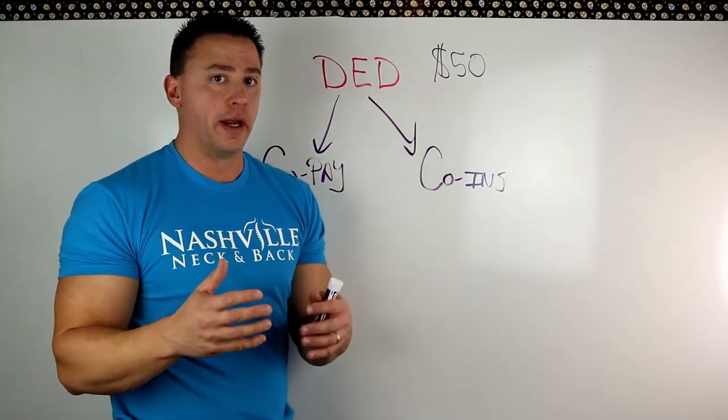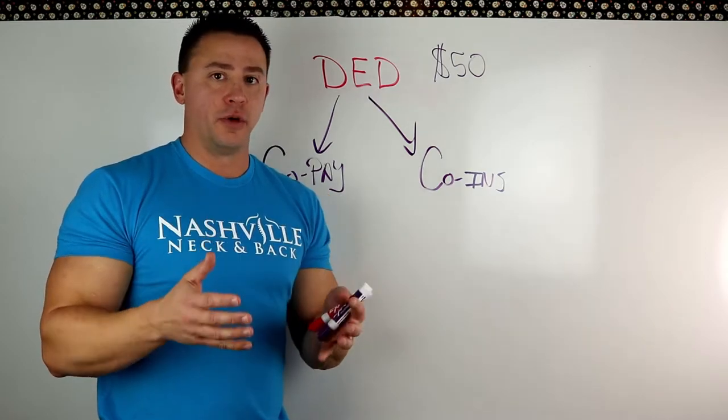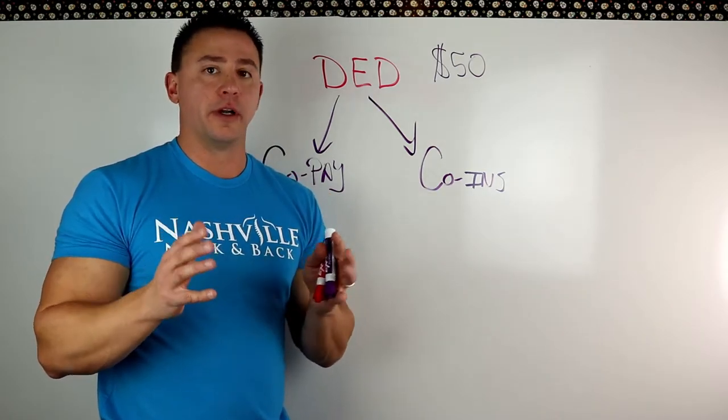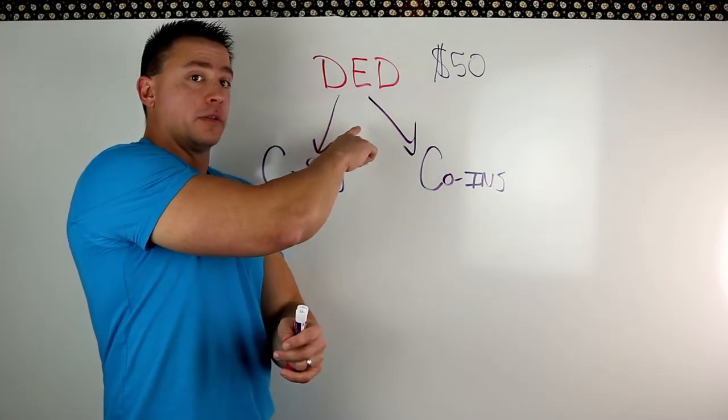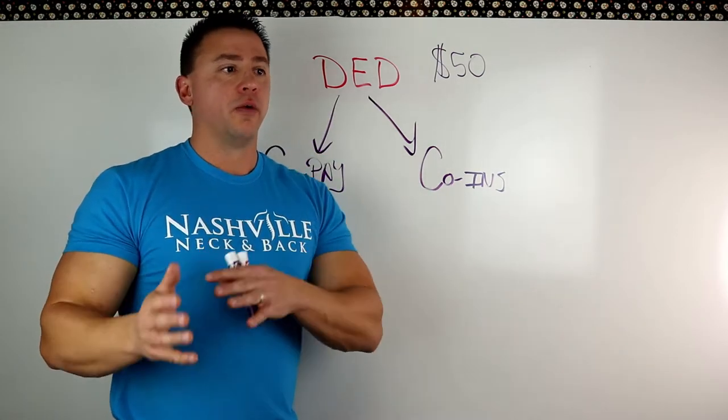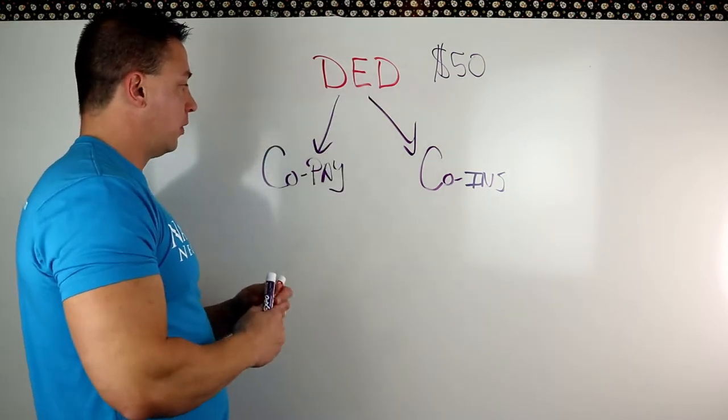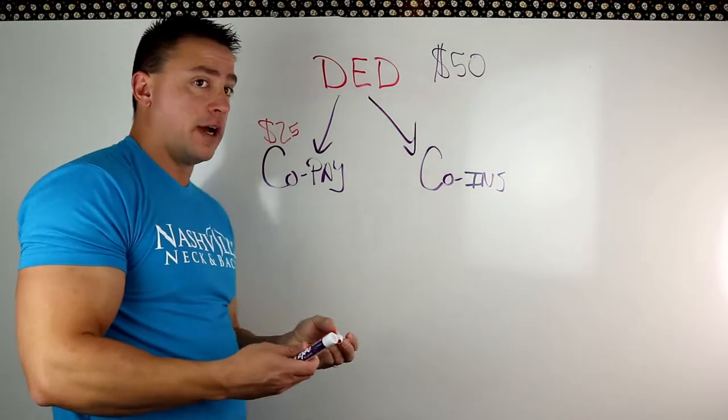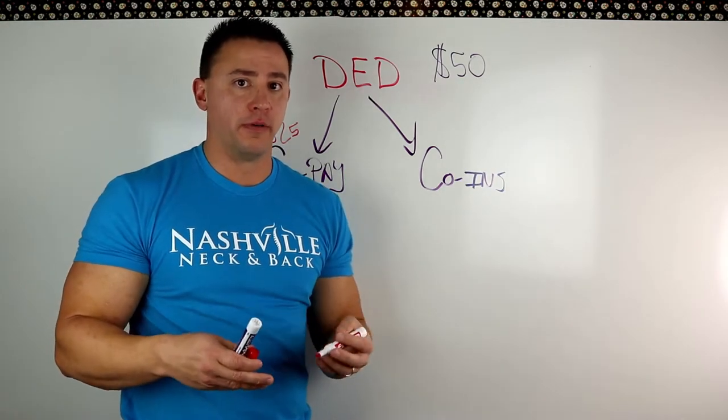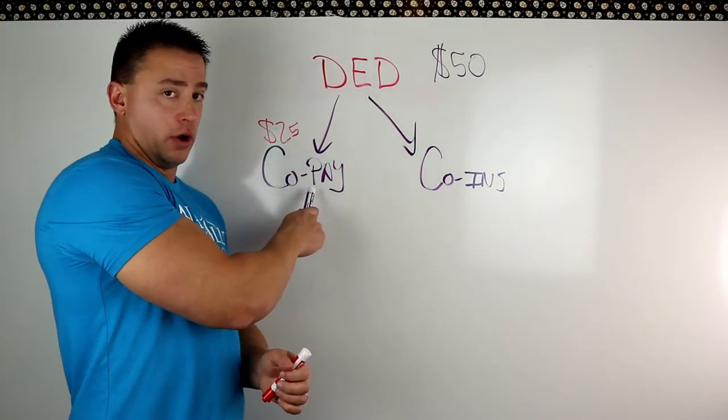So first, let's talk about co-pay. A co-pay is a set dollar amount, usually $20, $25, sometimes $30, $35, but that's the set dollar amount once you've met your deductible that you're going to pay when you go into the office for care. So again, if you've met your deductible and your co-pay is $25, then you're going to pay $25 each visit.